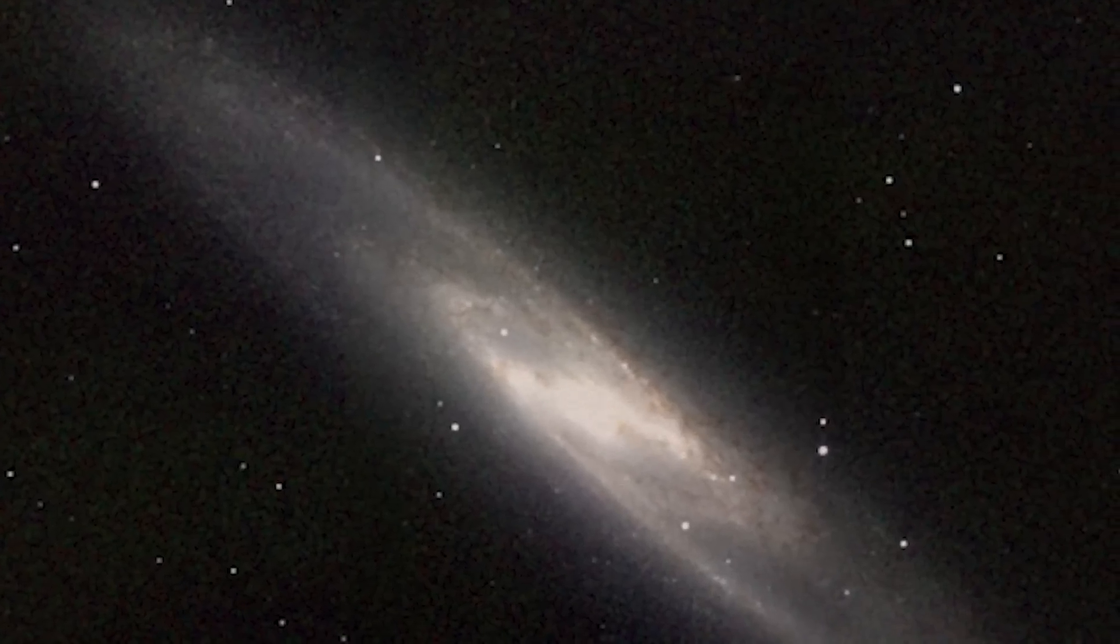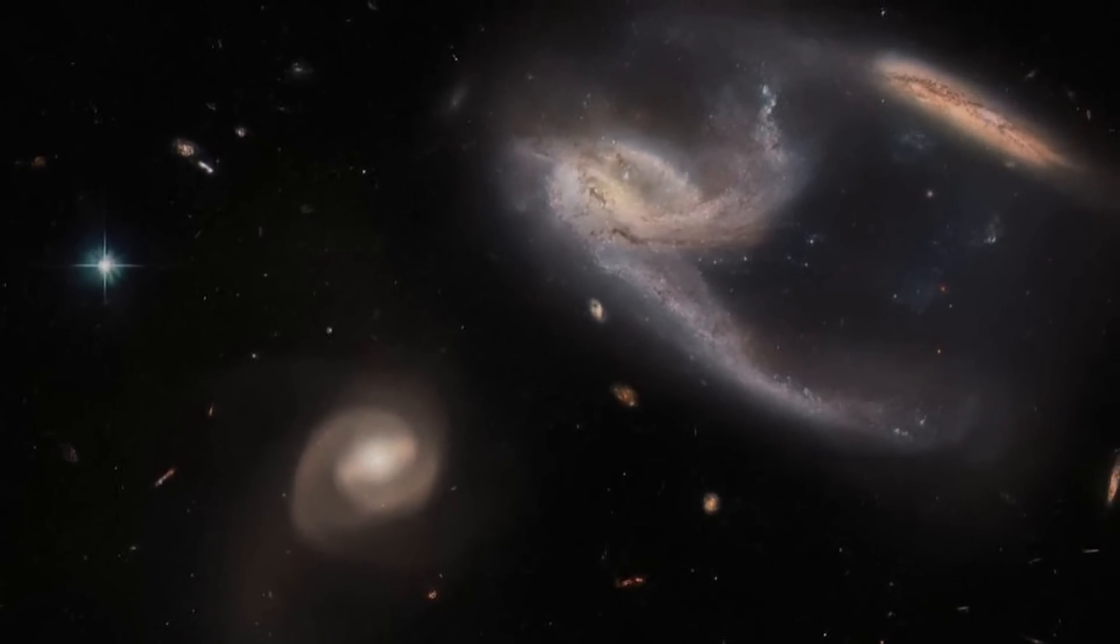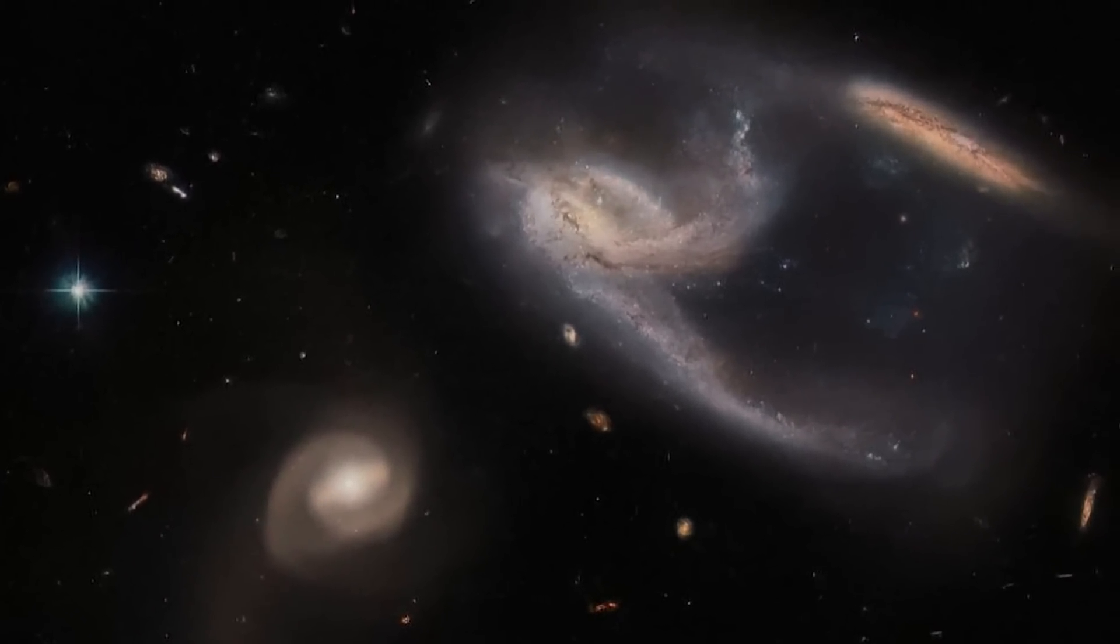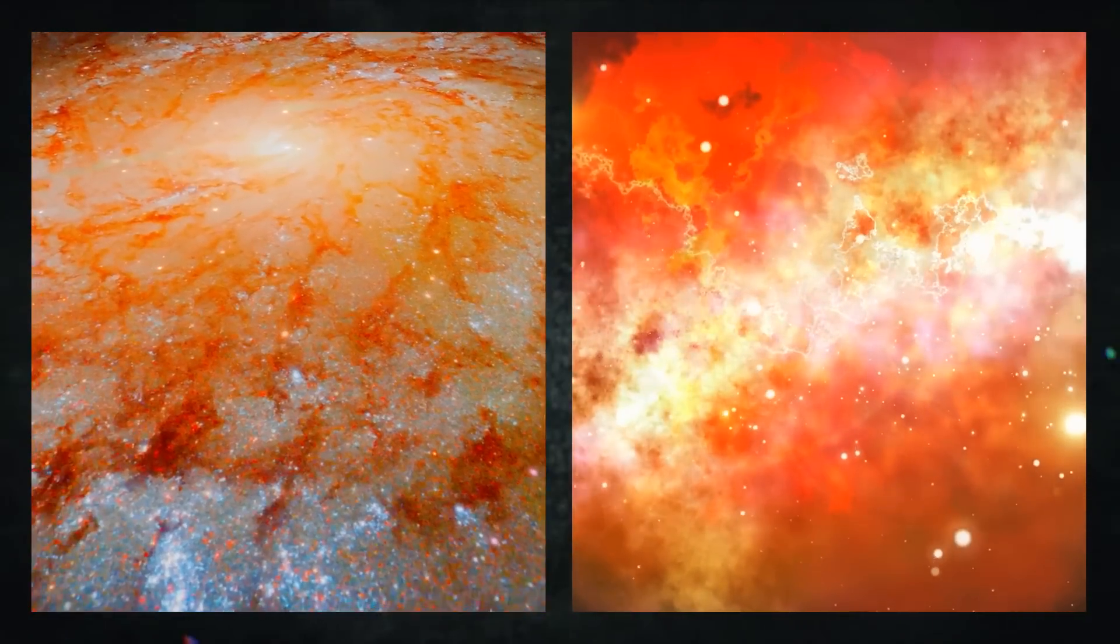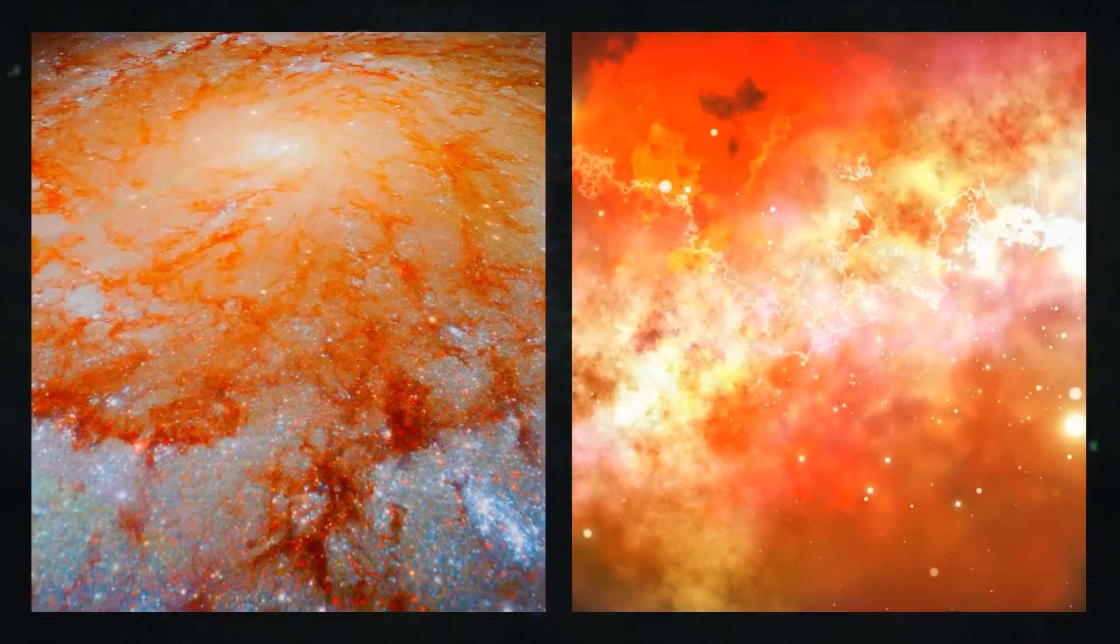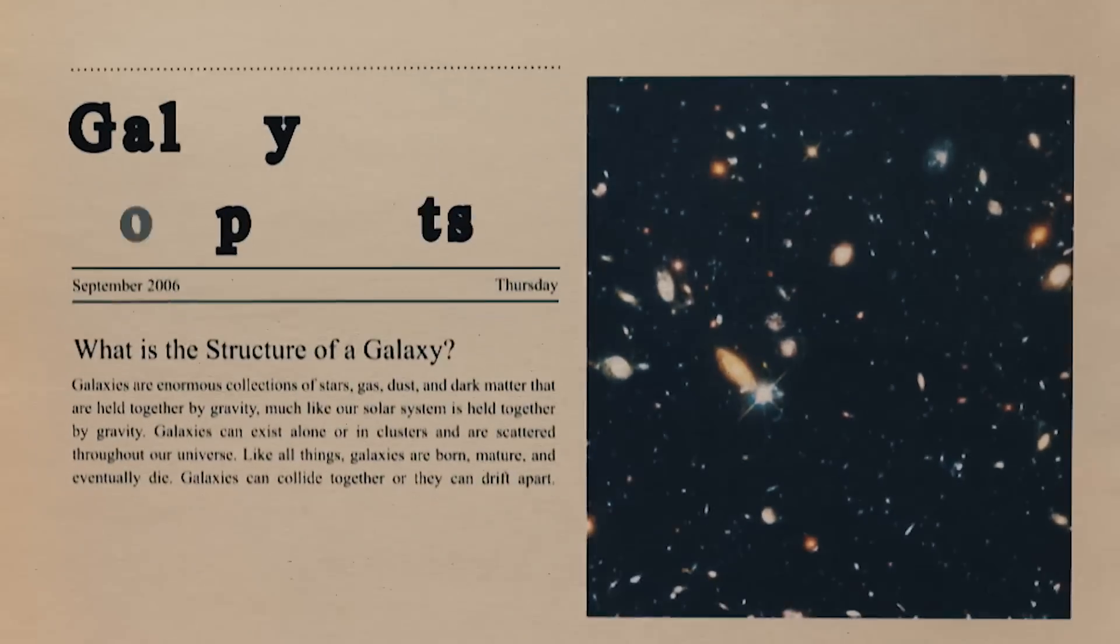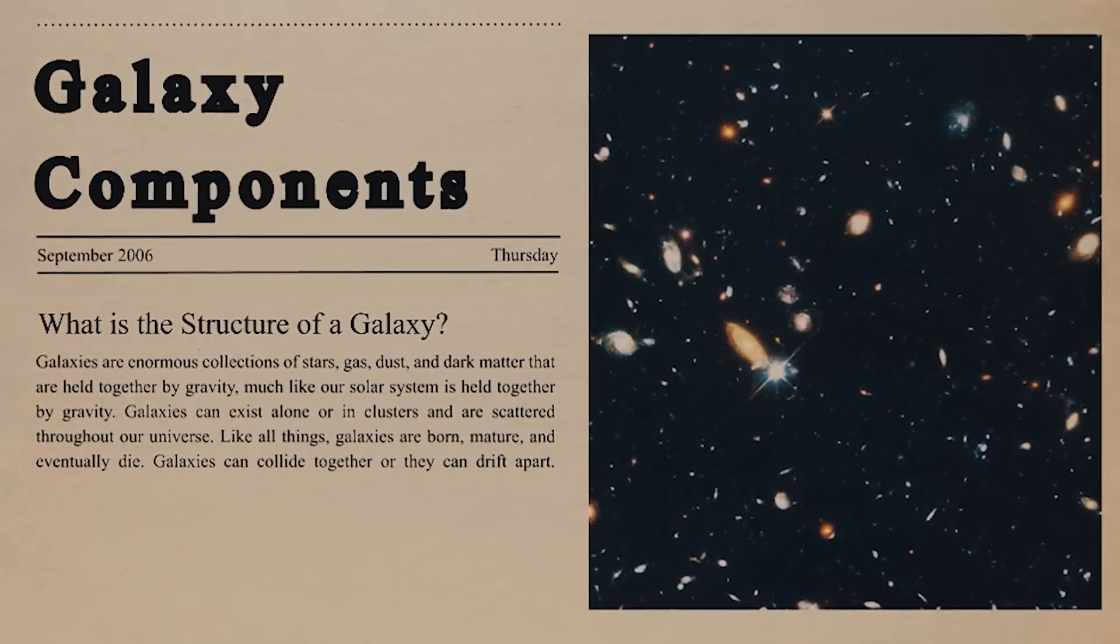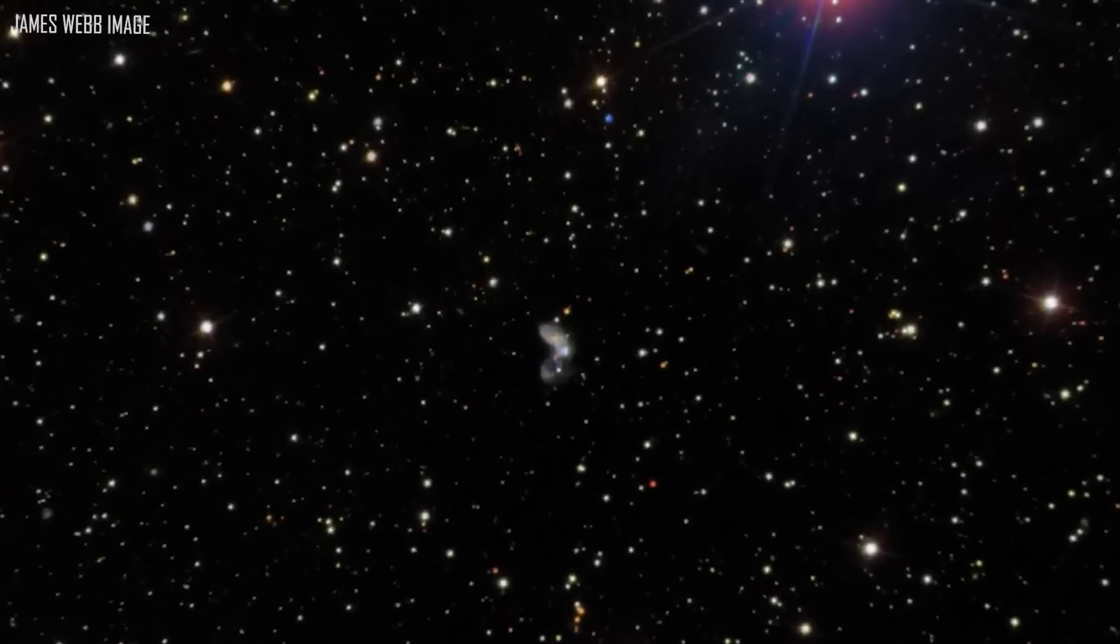We must ensure that any methane detected by JWST on a rocky planet in the habitable zone, the area of every star system most likely to support life, is not merely non-biological methane. The researchers developed a sound rule of thumb for when JWST eventually finds the telltale molecule on a rocky planet, orbiting a sun-like star, and in the habitable zone.